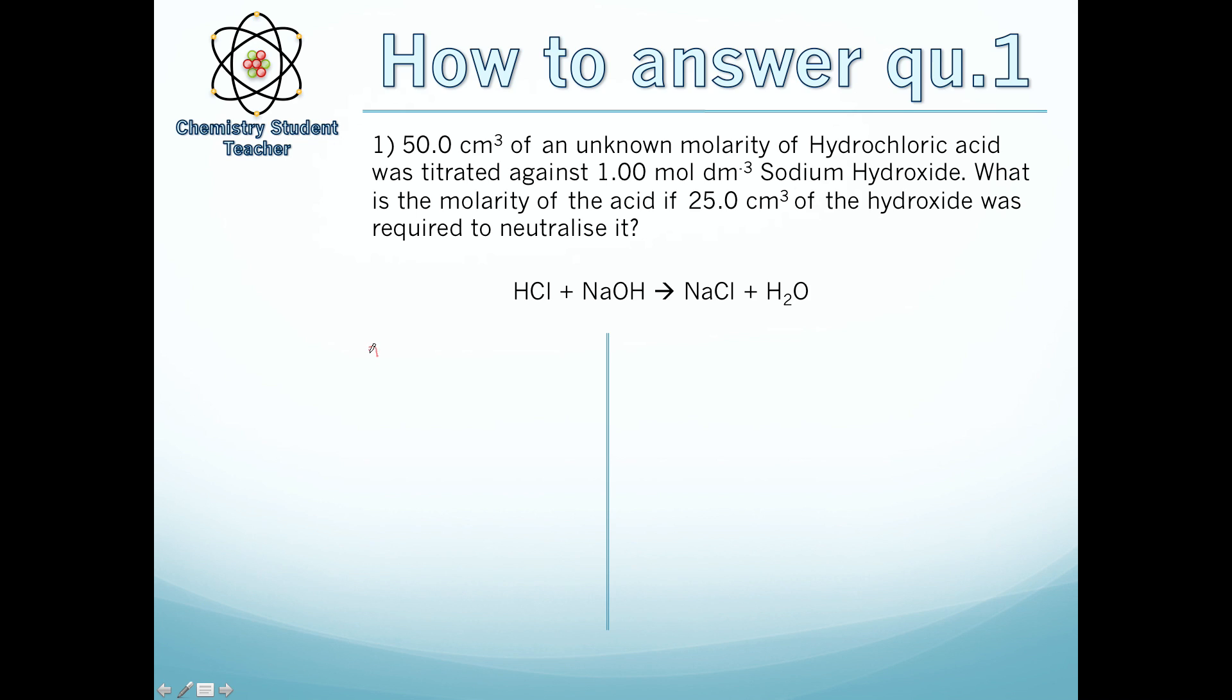Step two, we use n = C × V / 1000, where V is in cm³. We want to highlight what we know. We've got 50 cm³ of hydrochloric acid, 1.00 mol dm⁻³ of sodium hydroxide, and 25.0 cm³ of the hydroxide was required. For NaOH we have C and V, so we can work out number of moles. n = 1.00 × 25.0 / 1000. When we put that in, we get 0.025 moles.